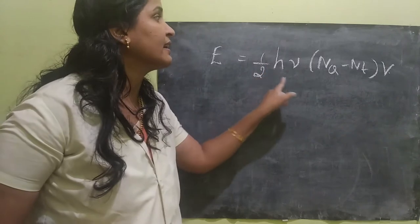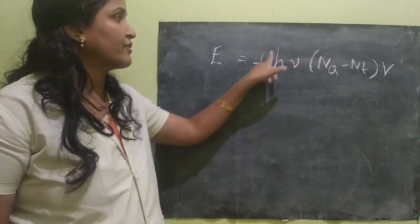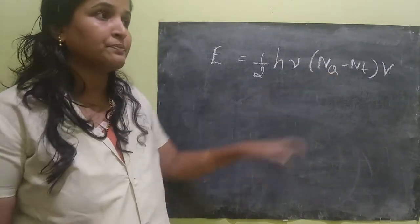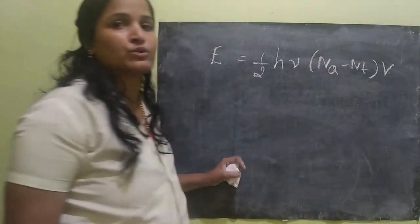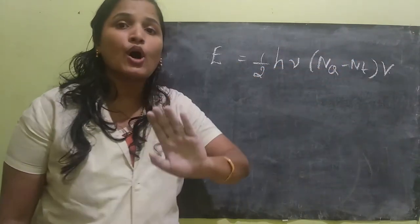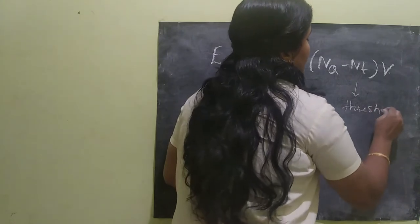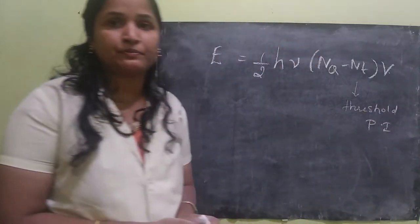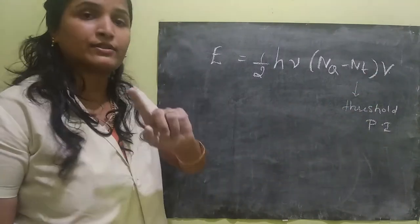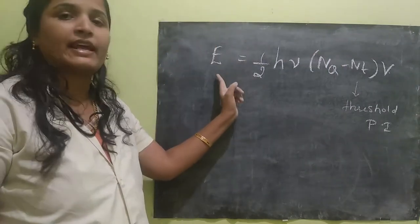Here H·μ is the energy of the photon — the light energy used for pumping. N_Q is the number of population inversion. So if the population inversion for Q-switching mode is very high, then obviously our energy will be high.